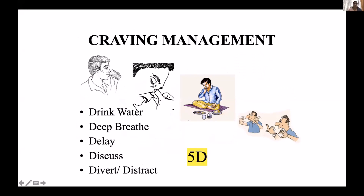For craving management, we use the Five D's. Understanding the emotional, psychological, and physical phases of relapse helps us guide patients. The Five D's are: Drink water, Deep breath, Delay — even delaying by 15 minutes or half an hour can help avoid substance use — Discuss with therapist, family members, or doctors, and Divert or Distract. These five components are important in craving management.